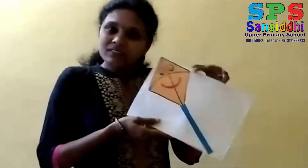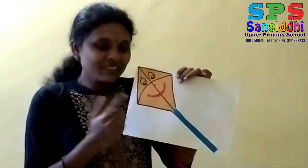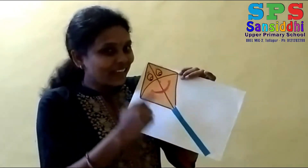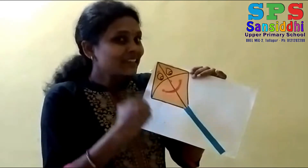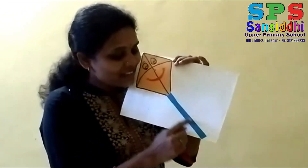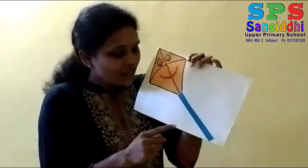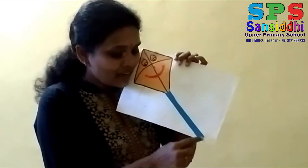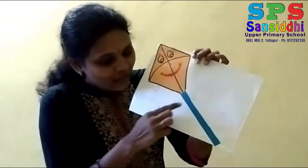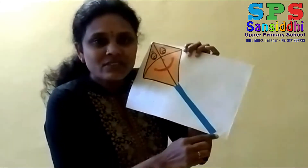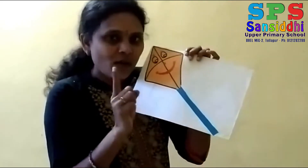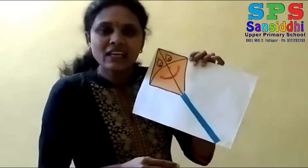Now I will show you some pictures related to left slanting line. See, which picture is this? This is a kite. This is the tail. Which position is the tail? Left slanting position — the tail is in left slanting position. It is called left slanting line.